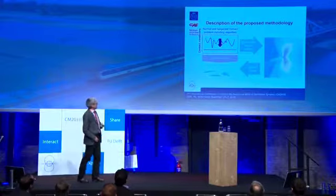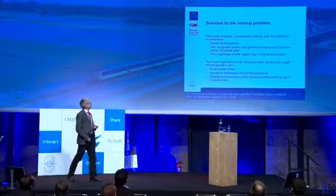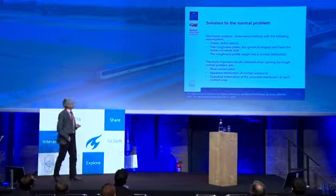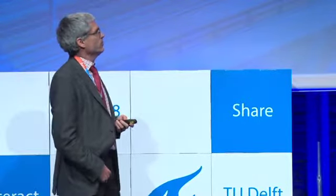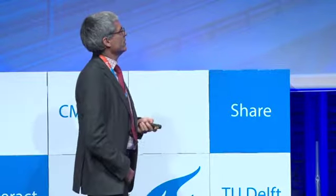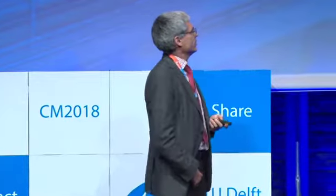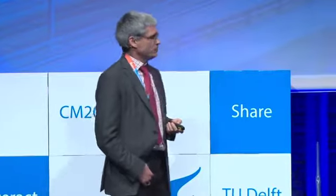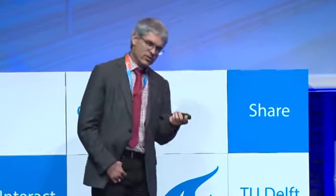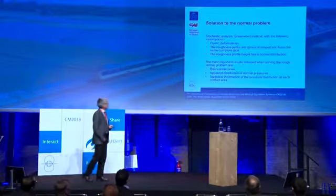Today I will only talk about the first part: the solution of the normal contact problem. The first attempt was to use a stochastic analysis — the Greenwood method — to get a stochastic distribution of the asperities. You only get elastic deformation, the roughness peaks are spherically shaped with the same curvature radius, and the roughness profile height has a normal distribution. With this you can calculate the real contact area, not just the Hertzian contact area, and the apparent distribution of normal pressures.